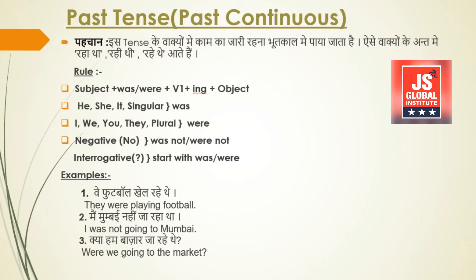For negative sentences, we add 'not' after 'was' or 'were'. For example number 2, 'was not' is used. Let us now look at the negative sentence example.